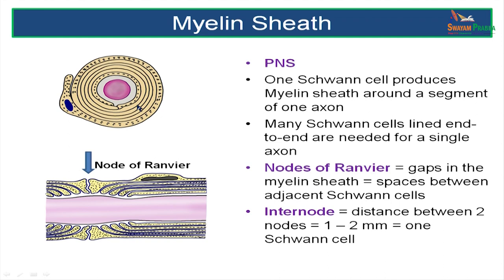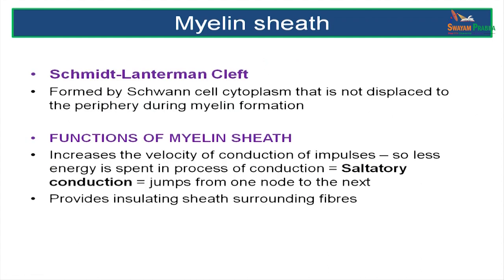One Schwann cell produces myelin for one segment of an axon, so you need many Schwann cells arranged end to end to provide myelin sheaths for the entire axonal length. A node of Ranvier is the space which is uncovered, without a myelin sheath, lying between two consecutive Schwann cells. The internode is the distance between two nodes of Ranvier — about 1 to 2 millimeters, the distance covered by one Schwann cell. Schmidt-Lanterman clefts are small amounts of cytoplasm or remnants that remain in the Schwann cells, important for their nutritive function.